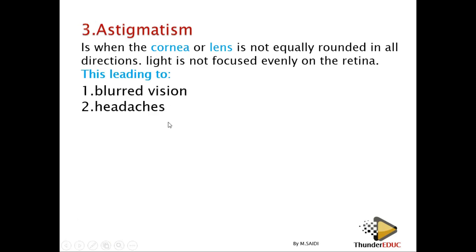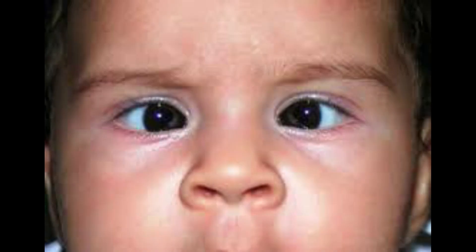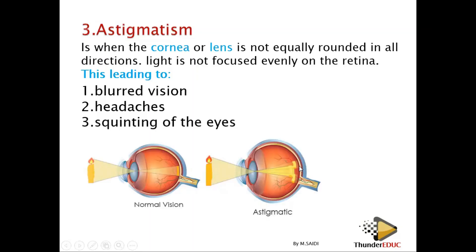Astigmatism leads to: number one, blurred vision; number two, headaches — it's like someone shaking the phone during a video call. The person also experiences squinting of the eyes. Multiple images are formed, so the brain becomes confused about which image to interpret; it tries to interpret everything and produces these effects.